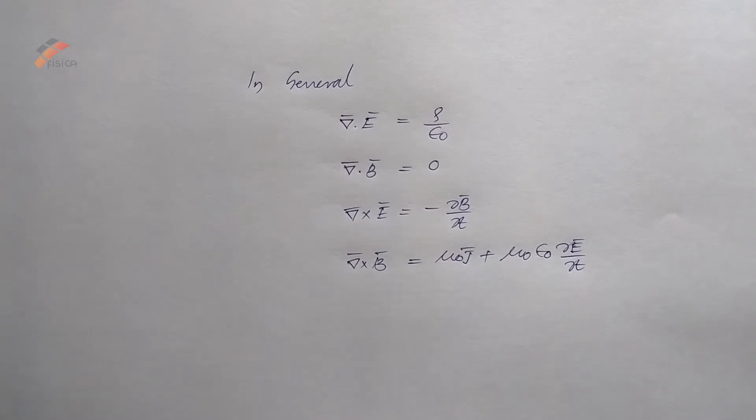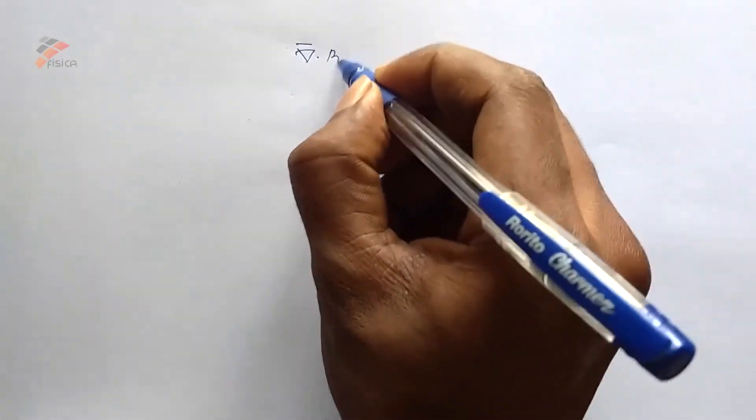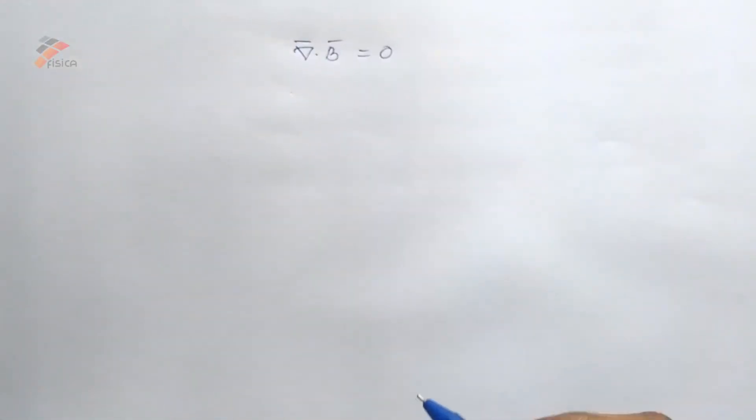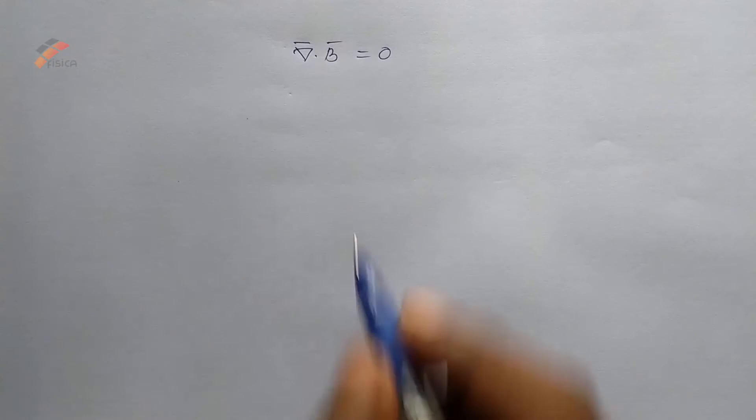Among Maxwell's equations, the Gauss's law in magnetostatics, that is del dot B equal to zero, this equation is always true.